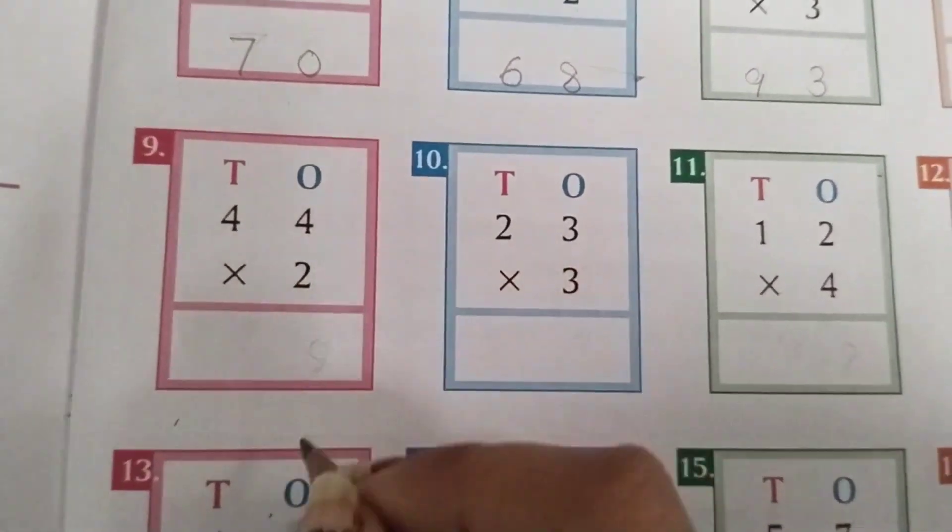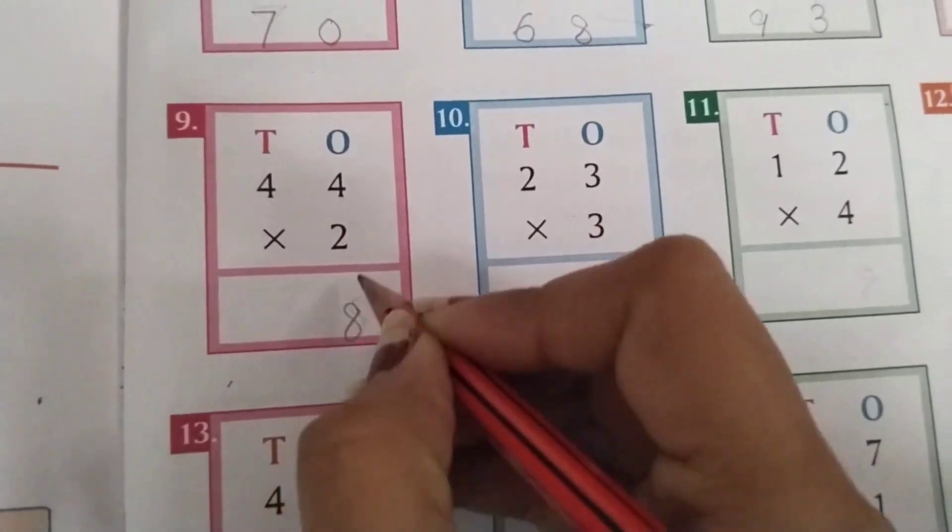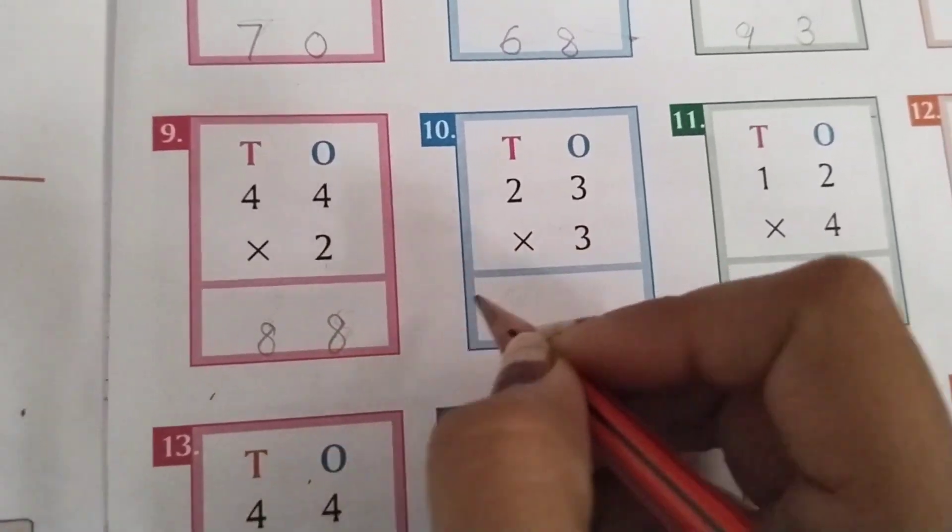Next we have 44 multiplication 2. 2 4s are 8. 2 4s are 8. 88 will be the answer.